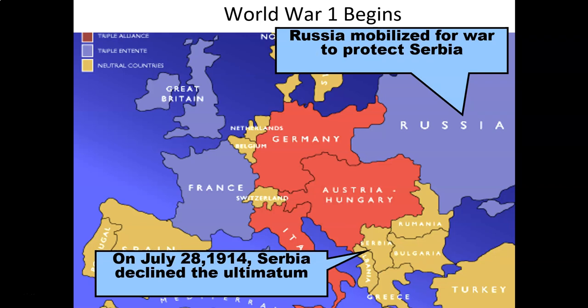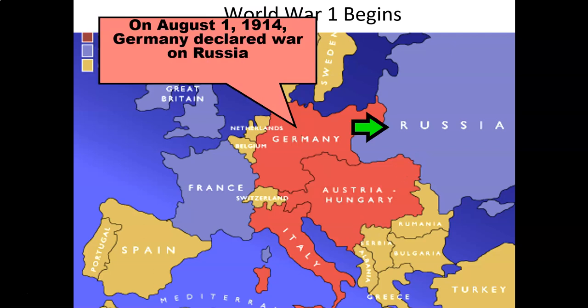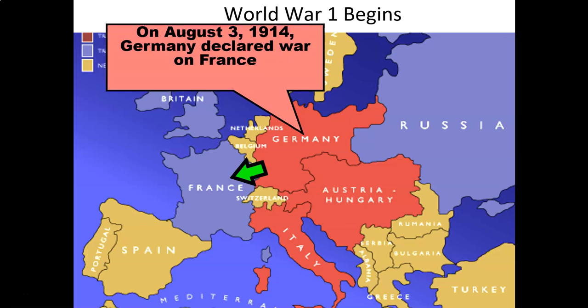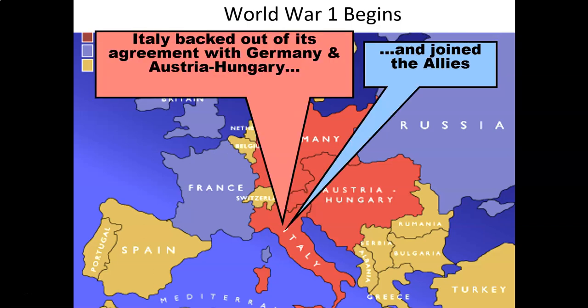On July 28th, 1914, Serbia declined the ultimatum. Russia started to mobilize for war to protect Serbia, and Austria-Hungary declared war on Serbia and its ally Russia. On August 1, 1914, Germany declared war on Russia. On August 3, 1914, Germany also declared war on France. On August 4, 1914, England declared war on Germany and Austria. Italy backed out of its agreement with Germany and Austria-Hungary and decided to join the Allies. This is basically the beginning of World War One.